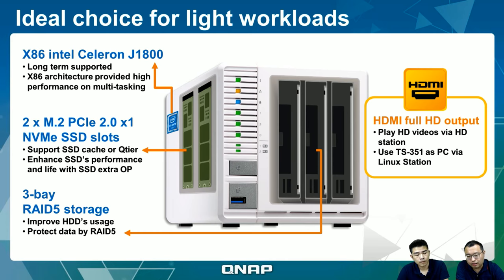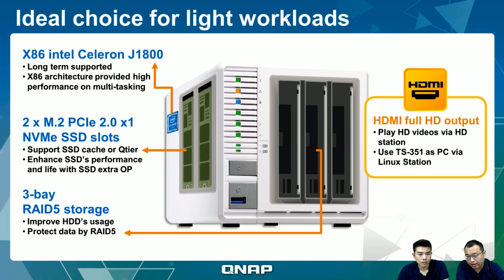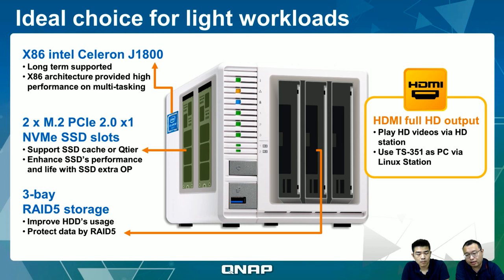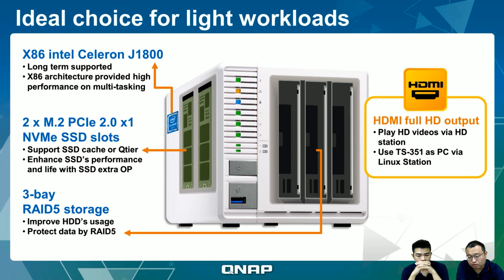From the front, once you remove the cover you have access to three 3.5-inch hard drives, making it easy to set up RAID 5 for better protection, or RAID 1 for redundancy. On the back there is HDMI output for 1080p, so you can output to a monitor or TV for entertainment, or use it with a USB keyboard and mouse for virtual machine desktop use. Thanks to the x86 Intel architecture, you can install more apps through the QNAP QTS App Center, and x86 is well-suited for multitasking.